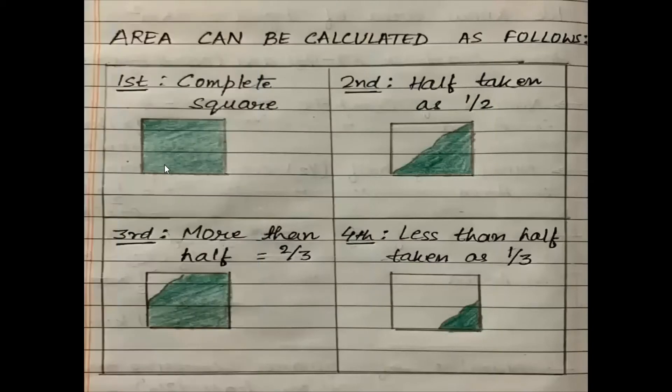I have drawn four different squares to make you more understand. First one is covered whole green. This is complete square. Second one it is half covered by green. This is 1 by 2 half.